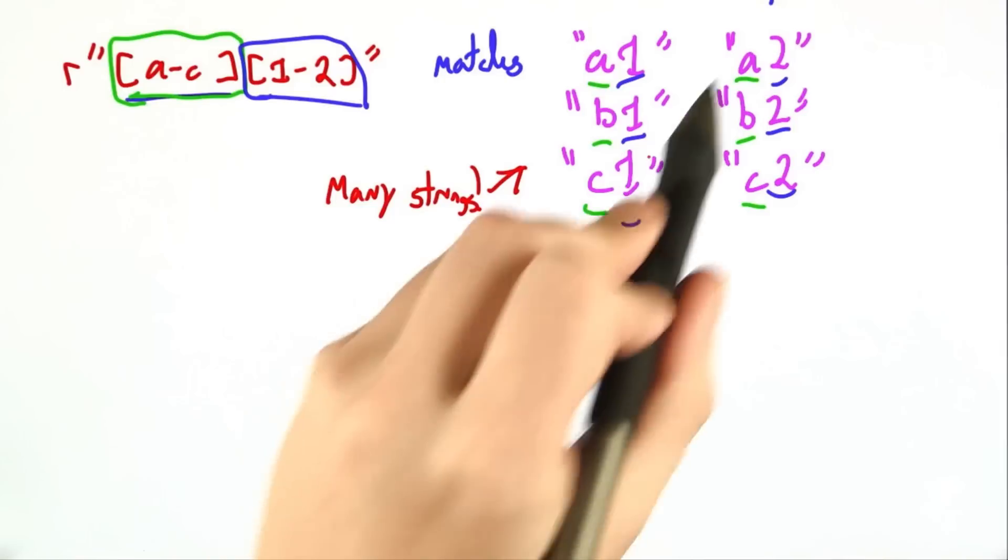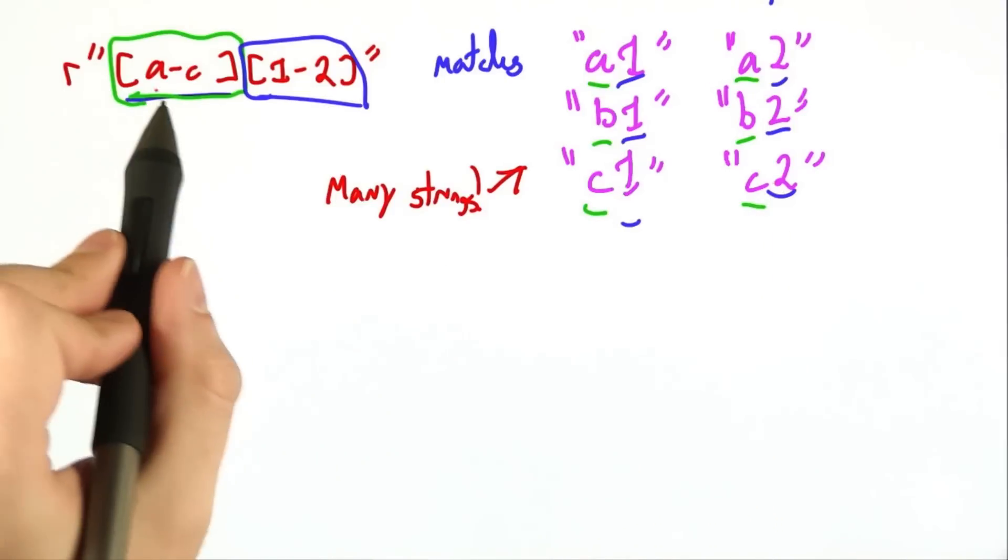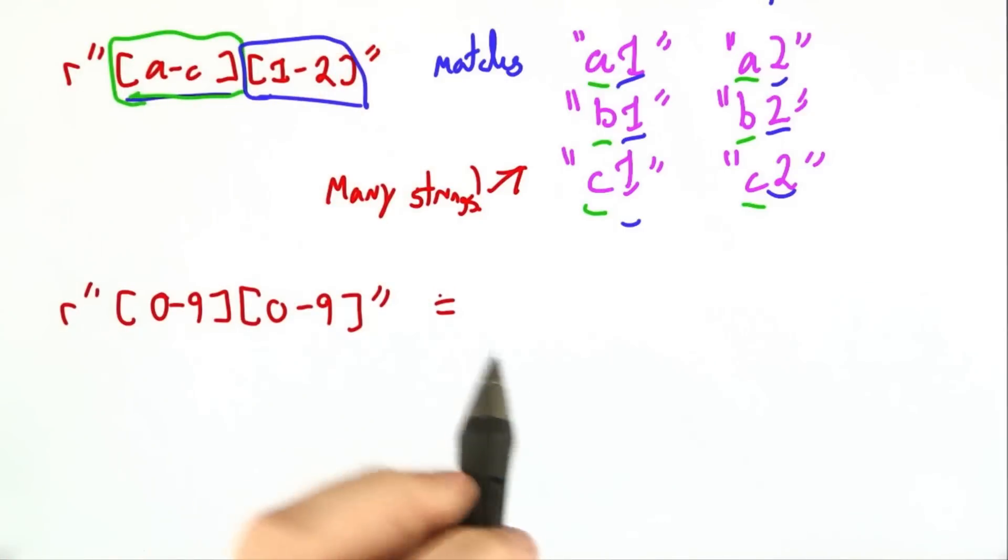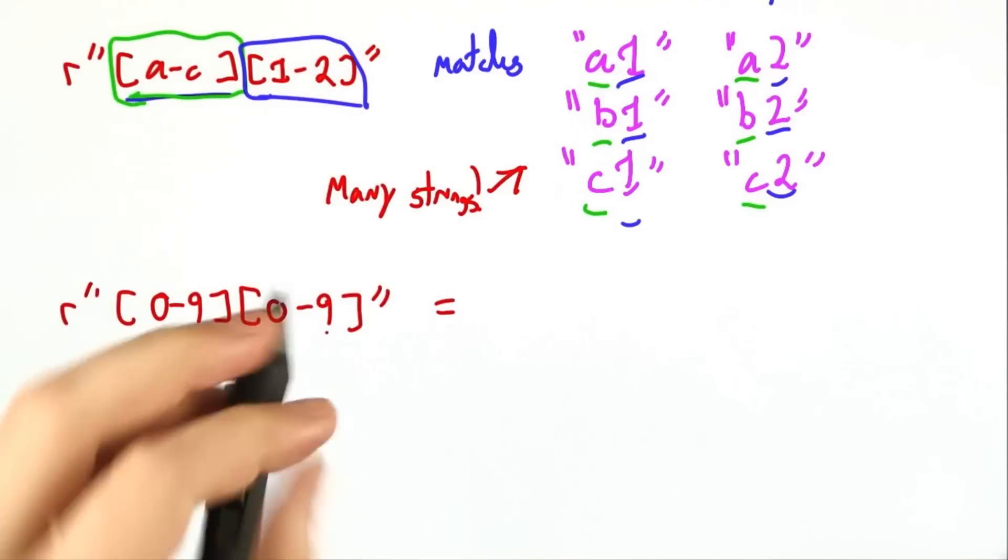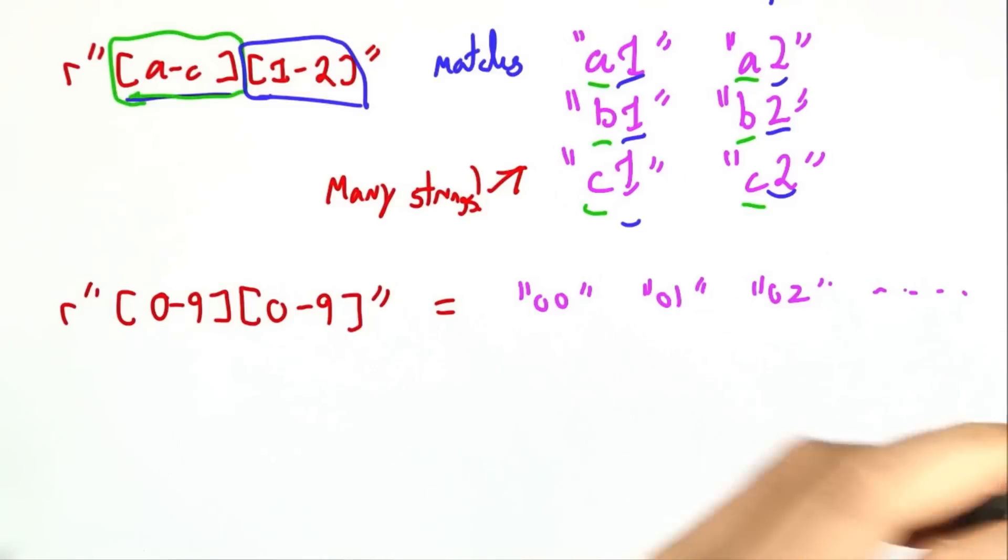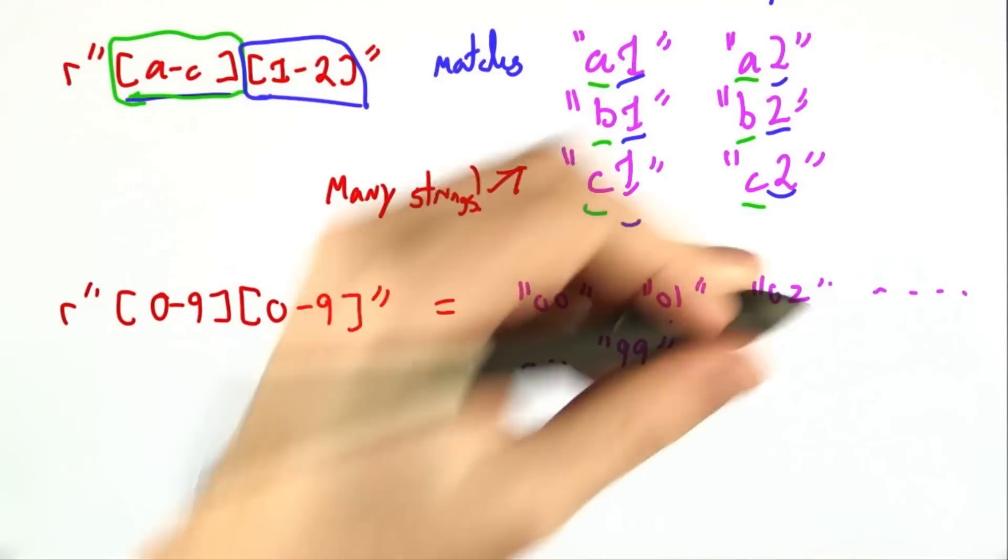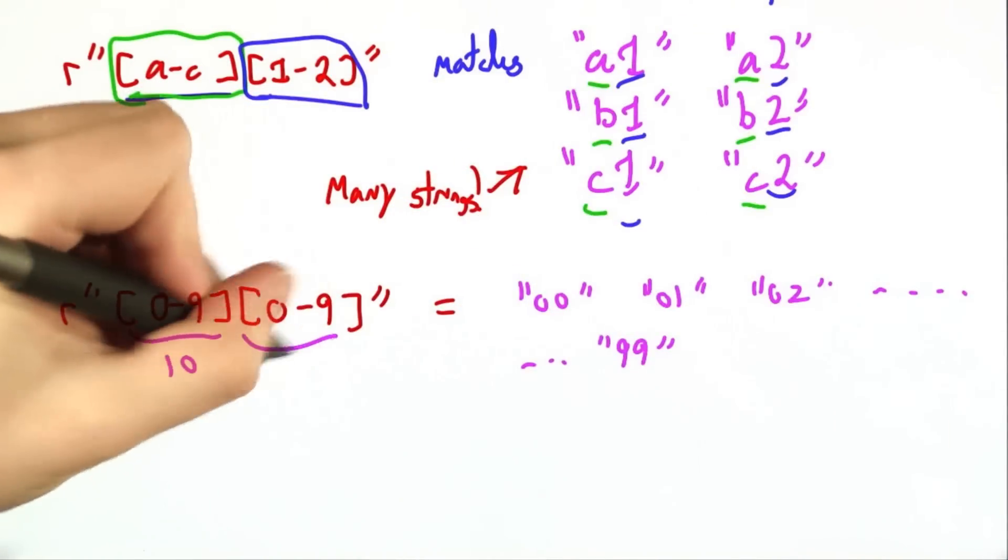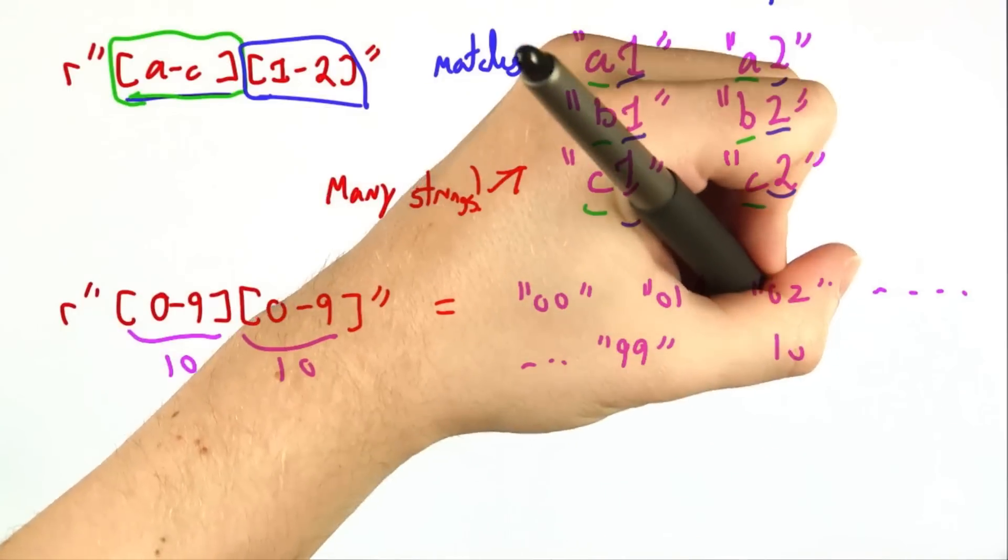You may have noticed that we suddenly had quite a few strings from a relatively small regular expression. In fact, if we put 0 through 9 next to 0 through 9, there are a huge number of strings that we would match—100 in total. Just as this matches 10 and this matches 10, when you put them together, you match 10 squared strings.